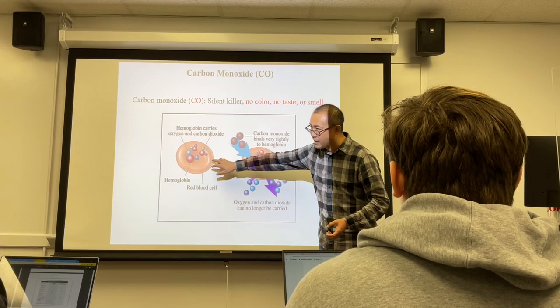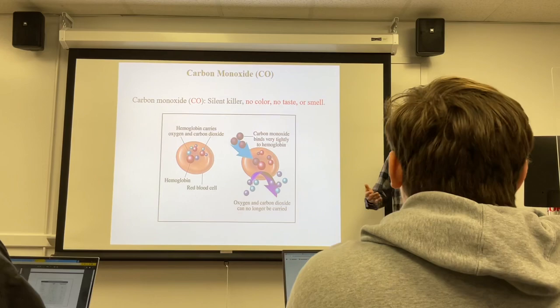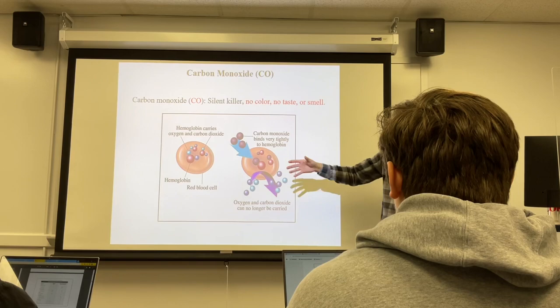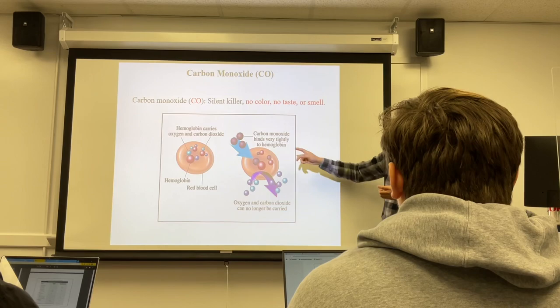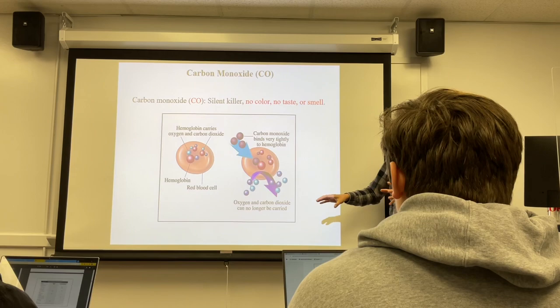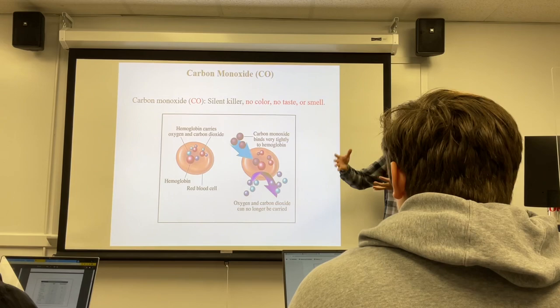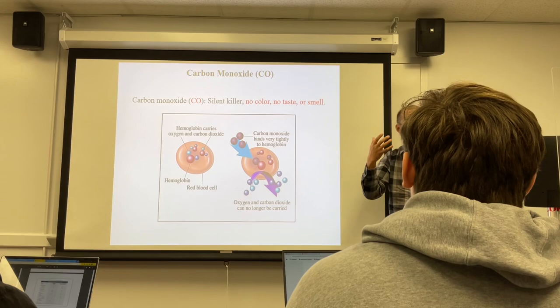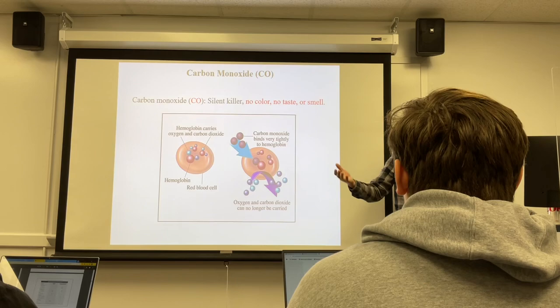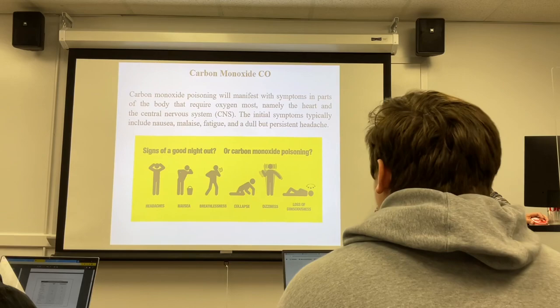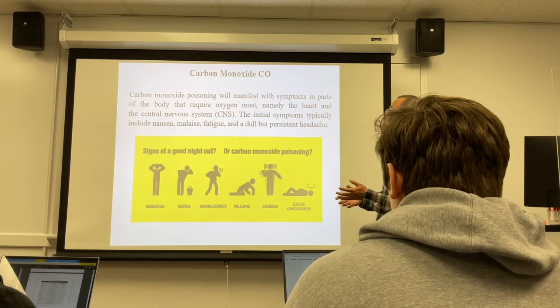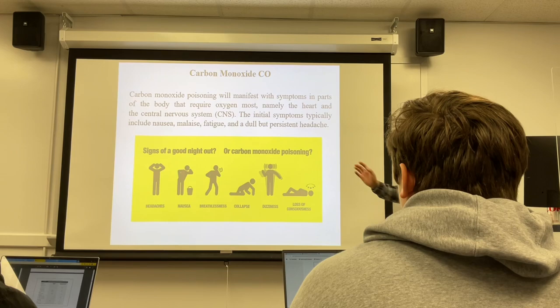The reason carbon monoxide can kill you is that on our red blood cells there's a protein called hemoglobin that carries oxygen and also carries carbon dioxide away. Carbon monoxide competes with oxygen and carbon dioxide on this protein, kicking oxygen out. So your blood can no longer supply oxygen. Your brain reacts first — you feel dizzy, nausea, lose consciousness. That's why it's called a silent killer.